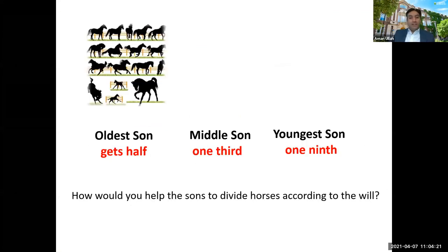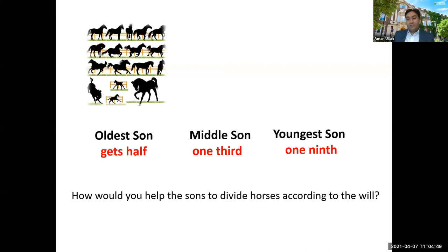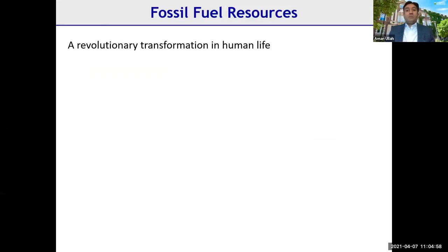There was an old man who had 17 horses. Before he passed away, he left a will for his three sons: the eldest would get half, the middle son one third, and the youngest one ninth. With 17 total horses, how would you help him divide them? Think about that as we start the presentation.